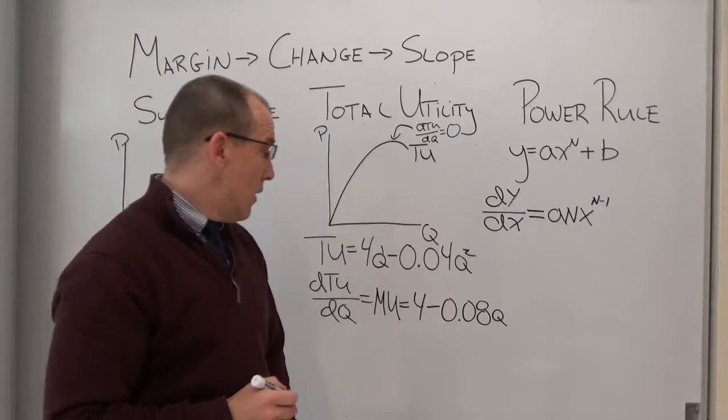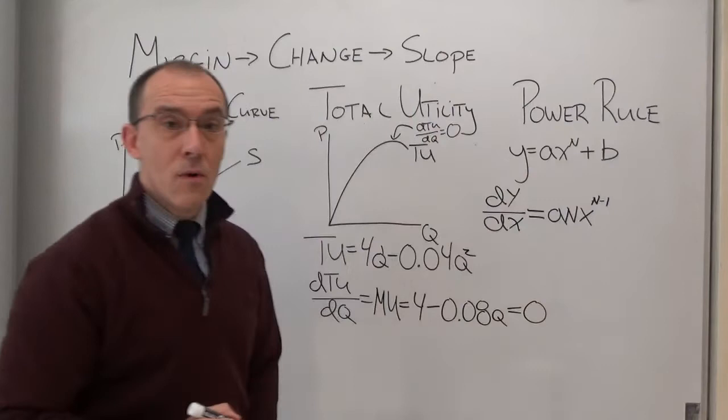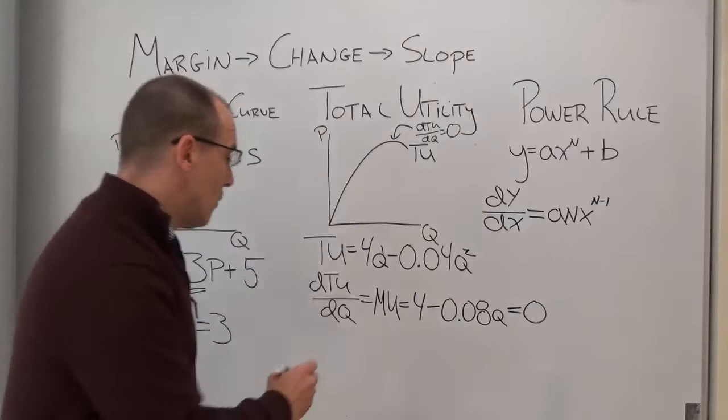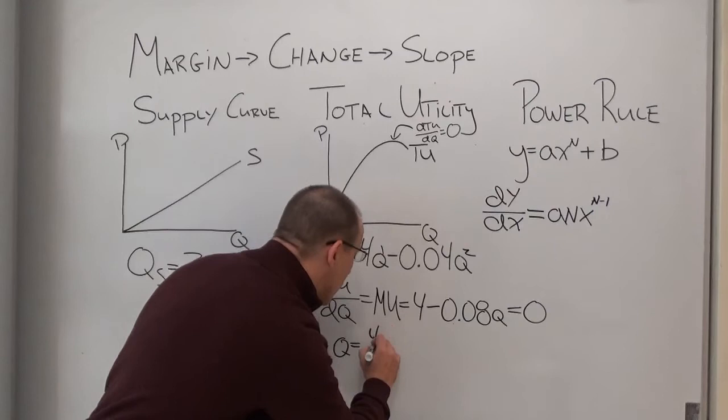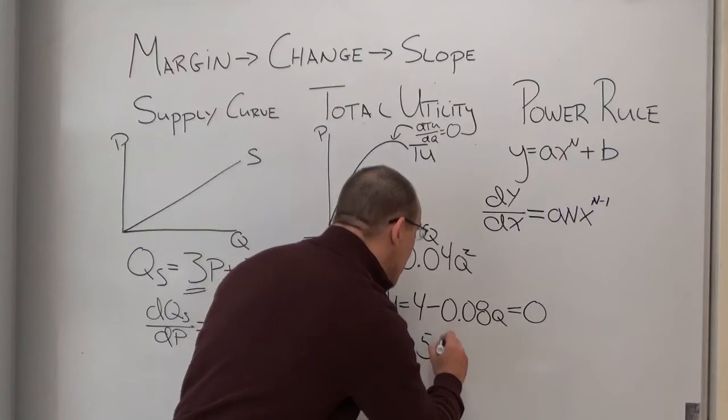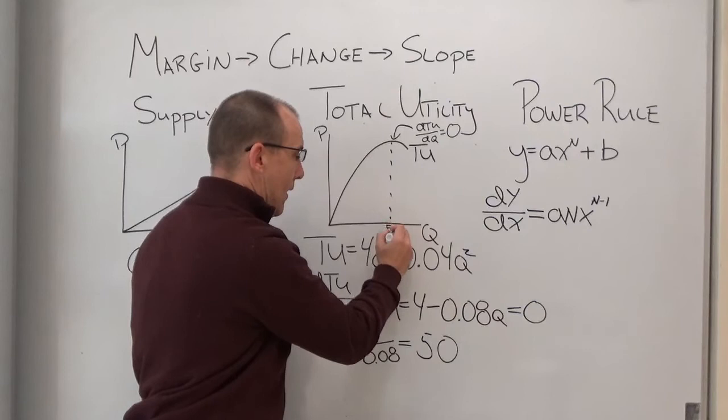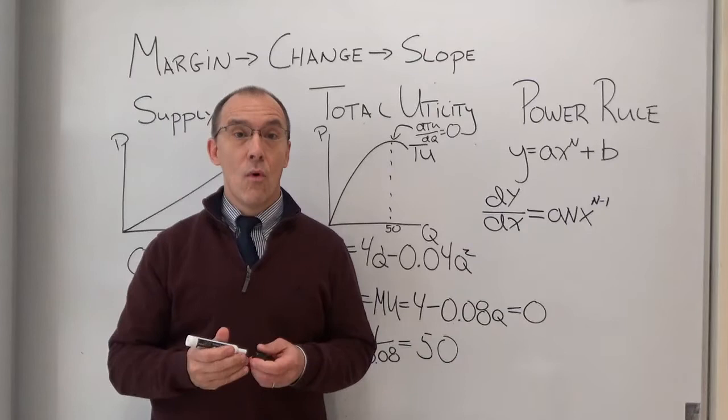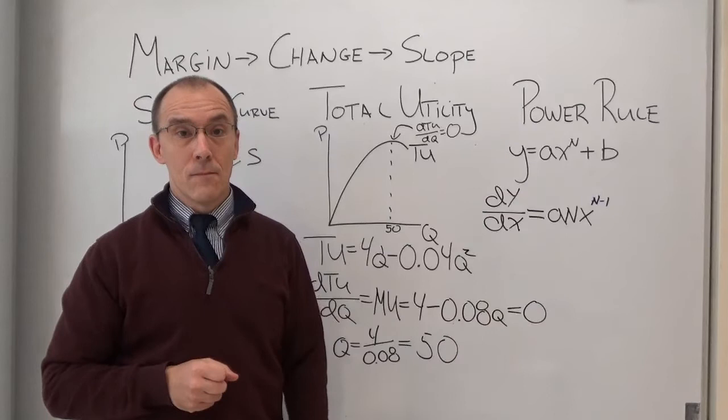And we're looking for the point where this equals 0. Now it's just simple algebra with this side of the equation. We can do q equals 4 divided by 0.08. And if I do my math correctly, I should get a quantity of 50. In other words, at a quantity of 50, my total utility will be maxed out. I should not want to have anything more at that point. My marginal utility will be 0.